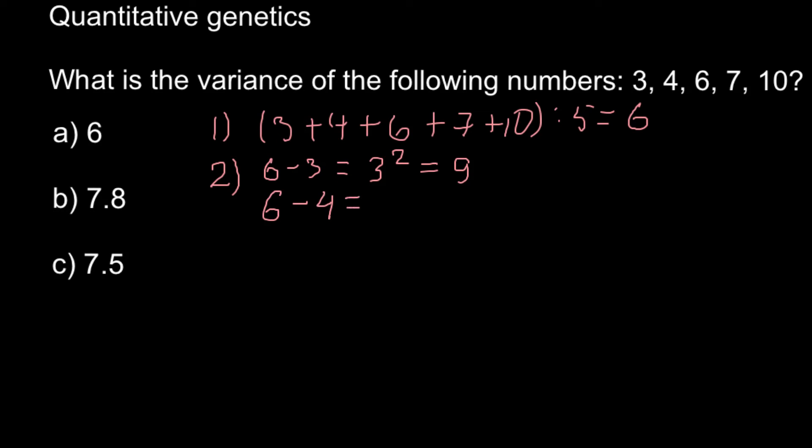And we have to repeat this with the second number. So 6 - 4 would equal to 2 squared would equal to 4. And then 6 - 6 would equal to 0. And 0 squared would equal to 0. Next 6 - 7 would equal to -1. And -1 squared would equal to 1. And the last one would be 6 - 10. And this would equal to -4. And -4 squared would equal to 16.